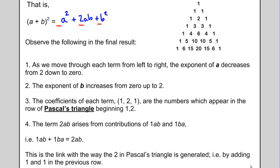Observe some other things in our final result. First, as we move through each term in our final answer from left to right, notice how the exponent on the a terms decrease from 2 all the way down to 0. Our first term is a squared, our second term just has 1a, and our third term doesn't even have an a at all. The exponent of the b term does the exact opposite. It starts at 0 but then goes all the way up to 2.